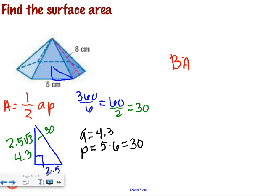Base area. Half our apothem, so half of 4.3, times our perimeter. What do we get? 64.5. Perfect.